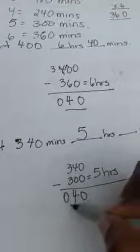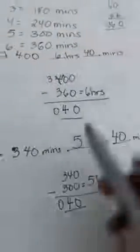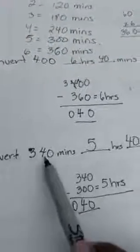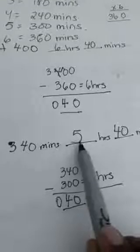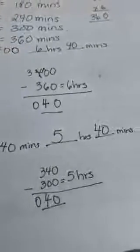Numbers the same, zeroes the game. It gives me 40 minutes. So 340 minutes is 5 hours and 40 minutes. Let's get started.